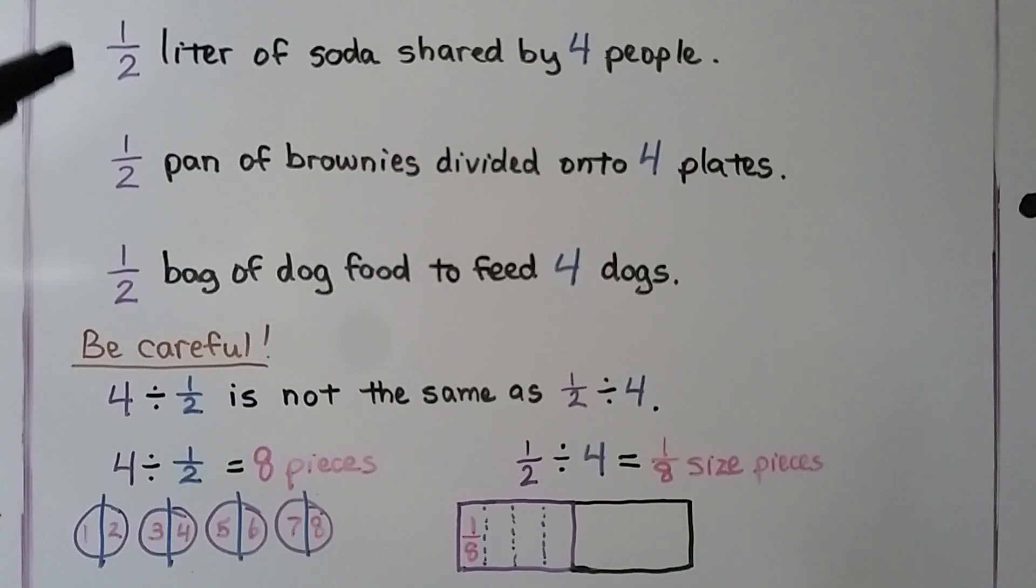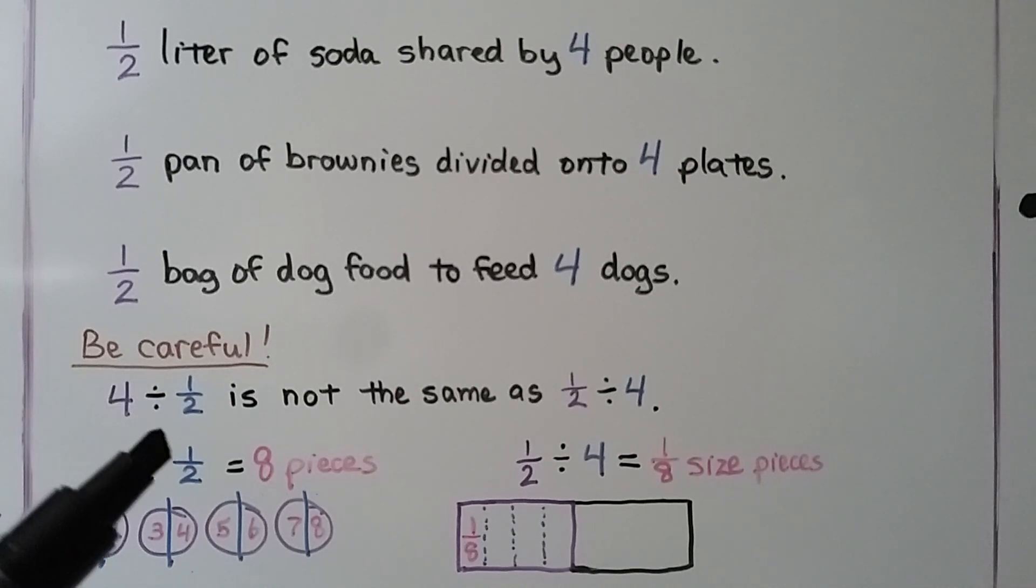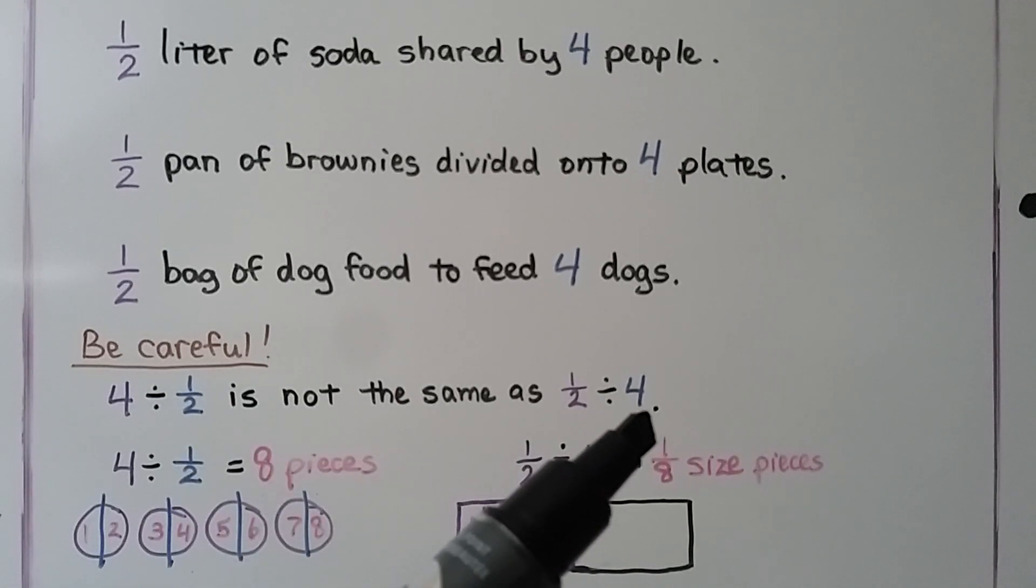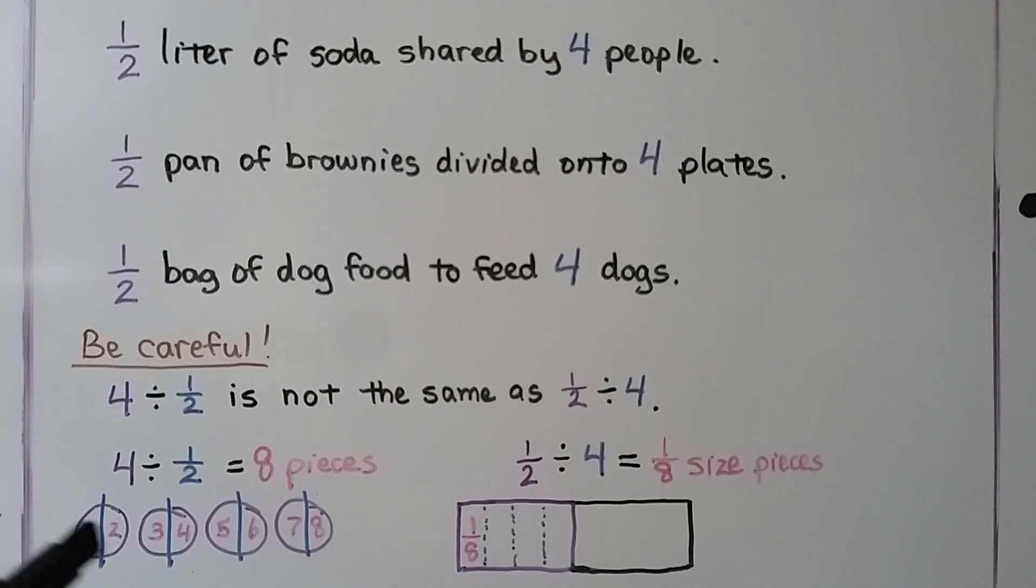We also could have written a word problem saying there's a half liter of soda shared by 4 people, or a half pan of brownies divided onto 4 plates, or even a half bag of dog food to feed 4 dogs. We have to be careful because 4 divided by 1 half is not the same as 1 half divided by 4. 4 divided by 1 half means we have 4 whole items that are each divided in half. That means we have 8 pieces. 1 half divided by 4 means we have half of this rectangle that is split into 4 equal sized parts. Each part is 1 eighth.